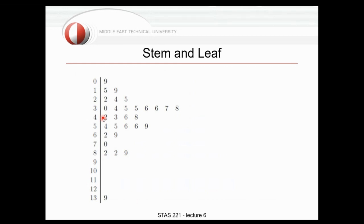Stem-and-leaf is also a well-known chart, though in practice we don't use it that much. It is good for ordinal or interval data types, like weather temperature — instead of listing all values, you can display them in this compact format, making it easier to find the mode or median.